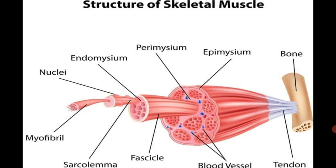In the figure, the brown color portion represents the bone to which the skeletal muscle is attached. The gray color portion represents the tendons — the tough bands of connective tissue that attach skeletal muscles to bones. The red color portions show the presence of skeletal muscles. Skeletal muscles are made up of long elongated cells called muscle fiber cells, muscle cells, or myocytes.